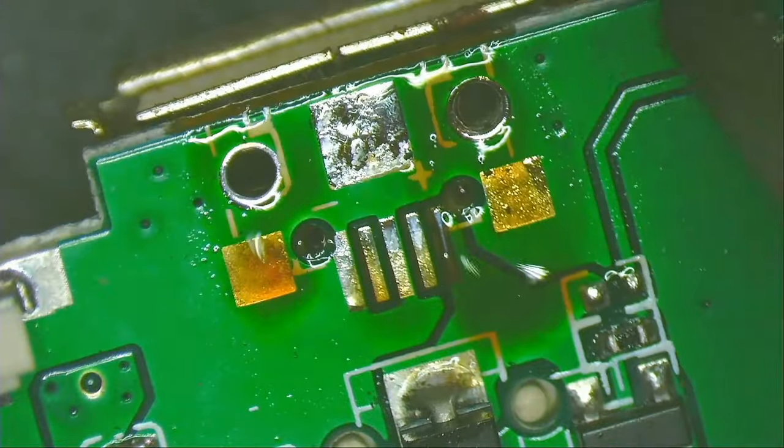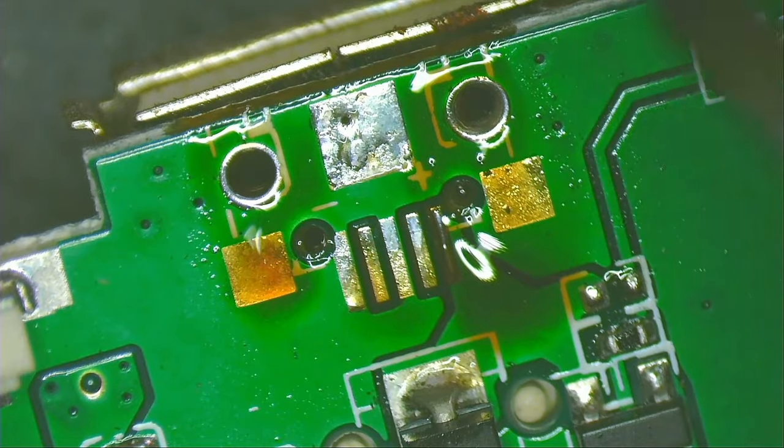My soldering station is set to 360 degrees Celsius. Then I clean with a cotton swab and isopropyl alcohol. The remaining flux residue is already a little burnt, and the more burnt the flux is, the more it sticks to the board and the harder it is to clean.